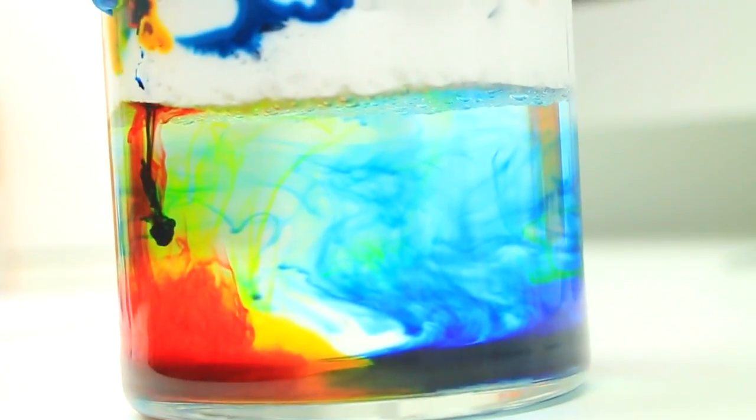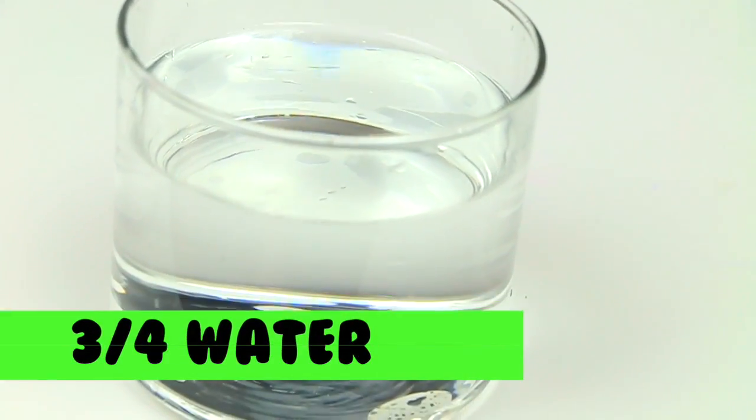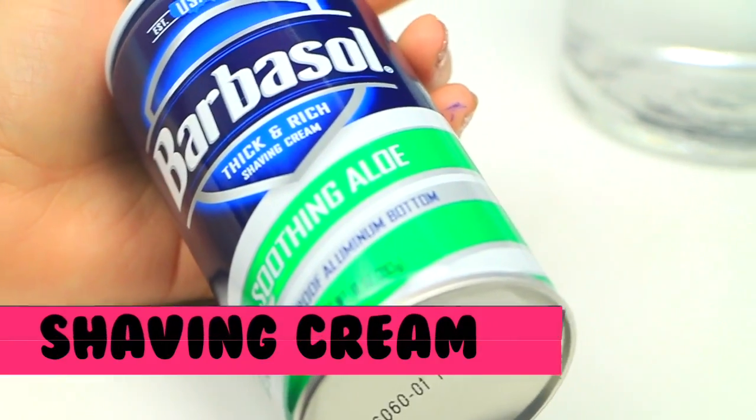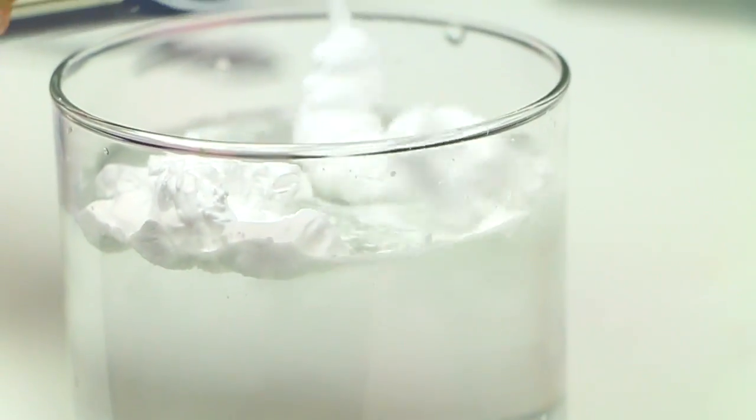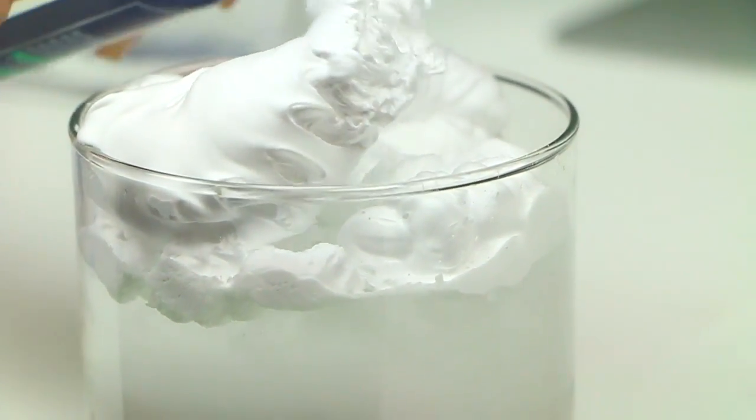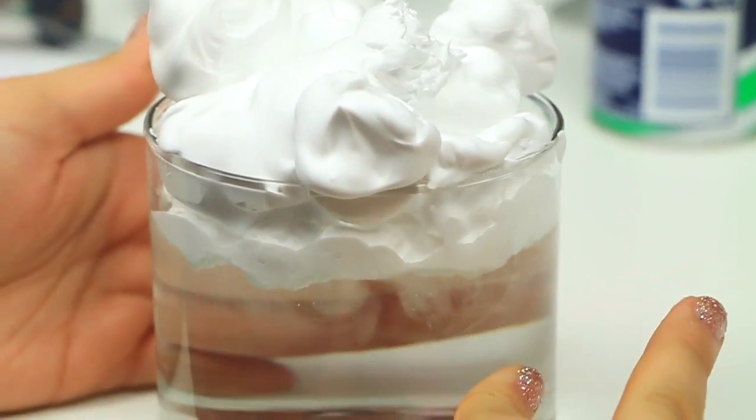This next one is rain in a jar. It's basically to show how rain happens and it's really easy to do as well. You're going to need three-fourths of water into a container and you're going to need some shaving cream. Shaving cream is going to act as the cloud. And then you're going to take some food coloring and pour it on top until it starts to come down like rain.